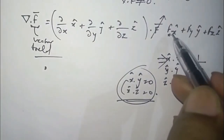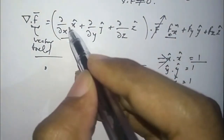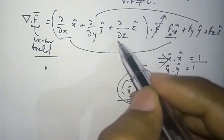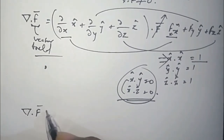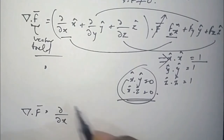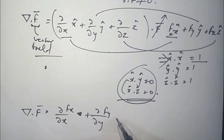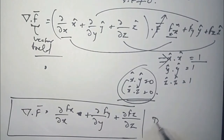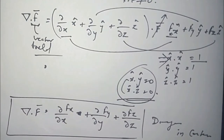Applying this, x-cap dot x-cap gives 1, and all cross terms are 0. So we only multiply matching components: del/dx with Fx, del/dy with Fy, and del/dz with Fz. This gives us the formula for divergence: ∂Fx/∂x + ∂Fy/∂y + ∂Fz/∂z. This is the formula for divergence in Cartesian coordinates.